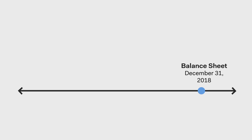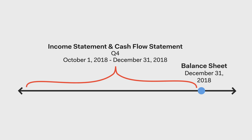The balance sheet represents a company's performance at a specific point in time. This differs from the income statement and cash flow statements, which both represent a company's performance over an entire period of time — often a quarter or an entire year. Now let's get into how to actually read a balance sheet.